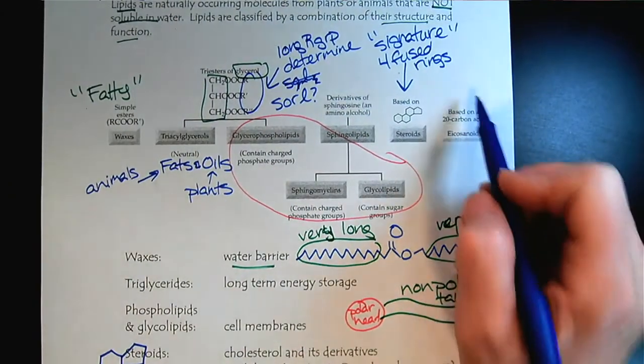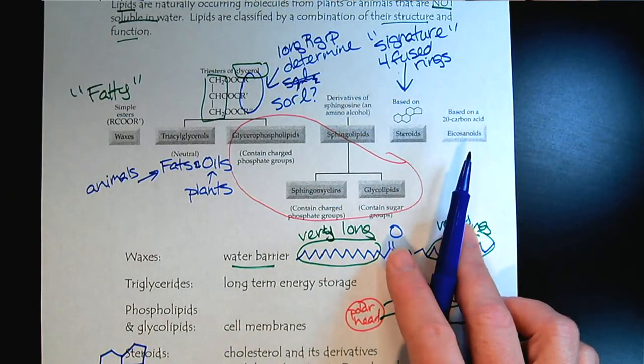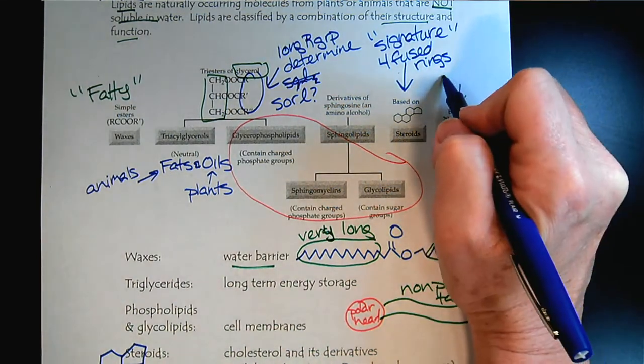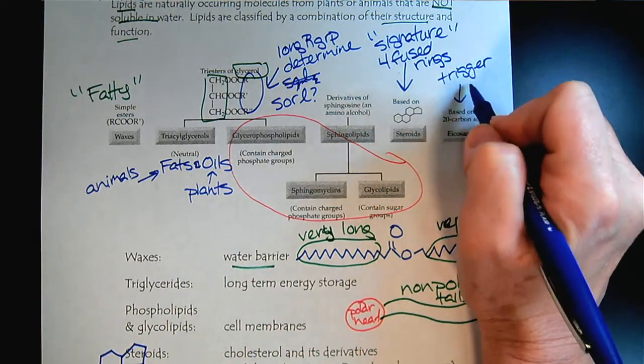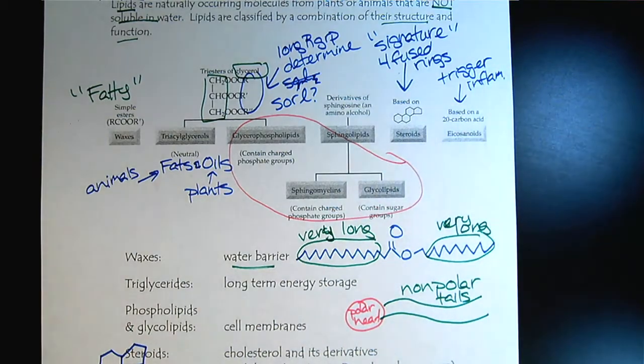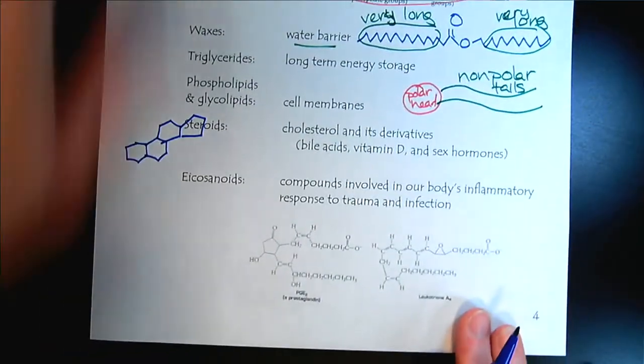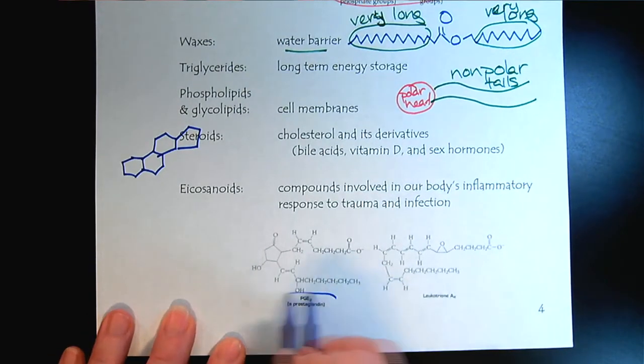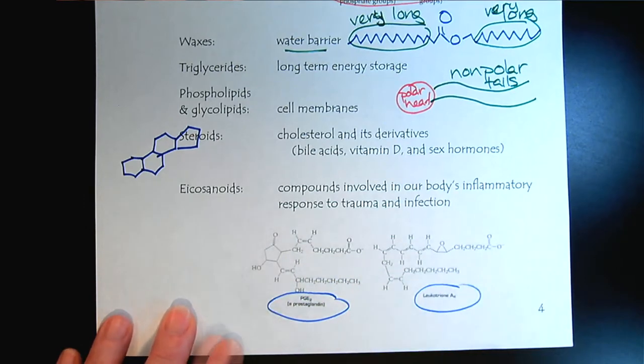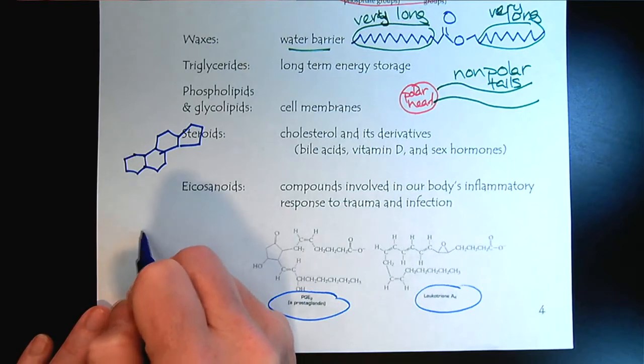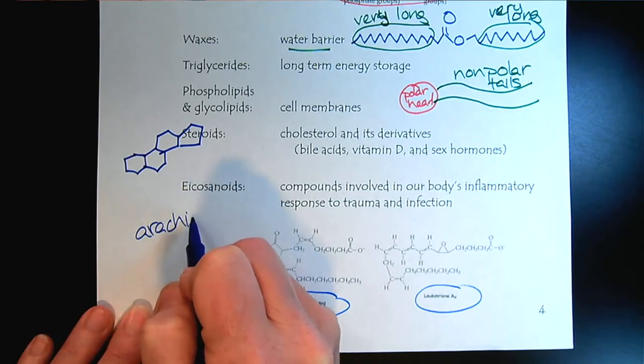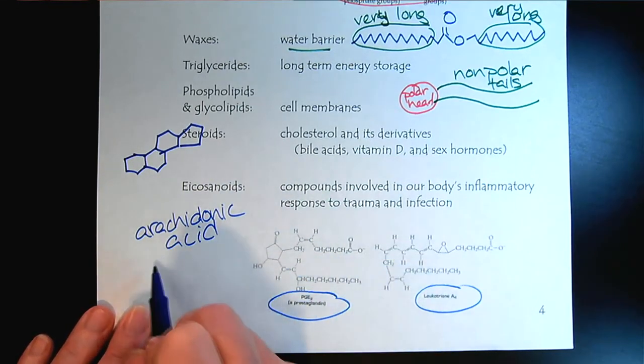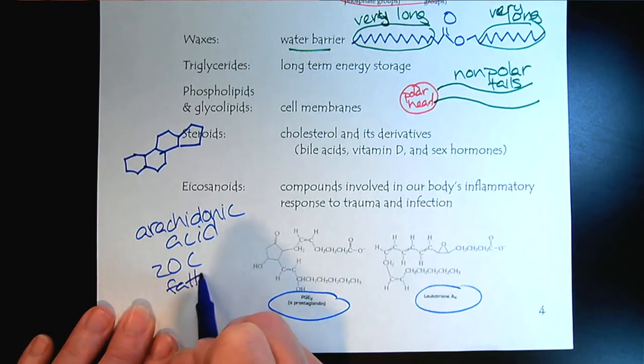The last group of lipids are the eicosanoids. These are compounds that trigger inflammation. Two very common subgroups of eicosanoids are the prostaglandins and the leukotrienes. What we will learn about these is that they're all derived from arachidonic acid. Arachidonic acid can be used to synthesize either one, and it's a 20-carbon fatty acid.